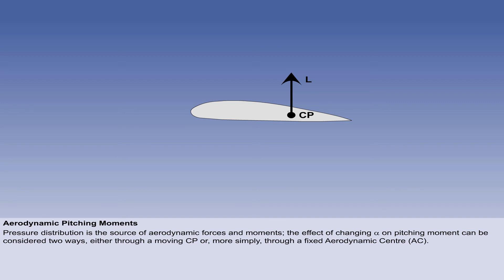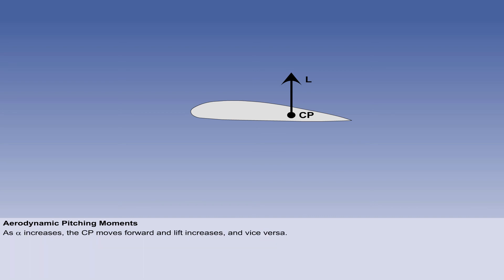There are two ways of considering the effects of a changing angle of attack on the pitching moment of an aerofoil: either by measuring the changes in magnitude of lift through a moving centre of pressure, or, more simply, through a fixed aerodynamic centre. You know from the previous parts of this lesson that as the angle of attack increases, the CP moves forward and the magnitude of lift increases, and vice versa. This results in a changing force with a changing point of application.